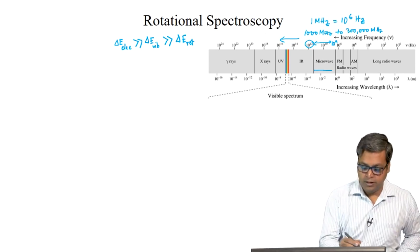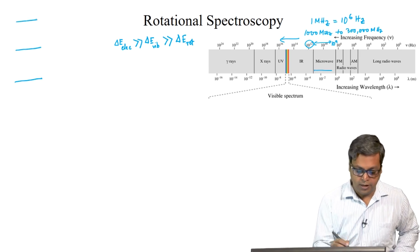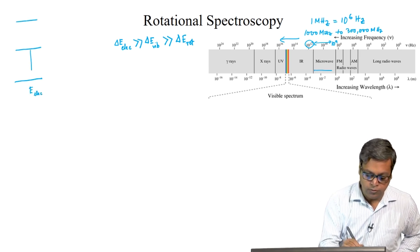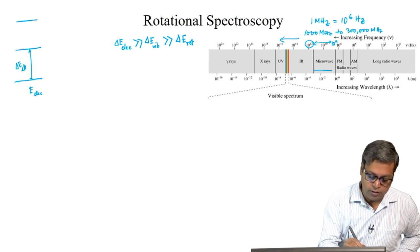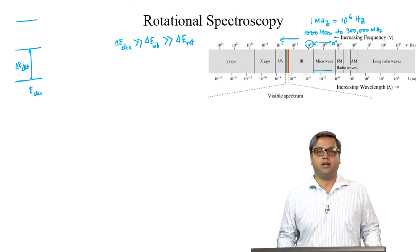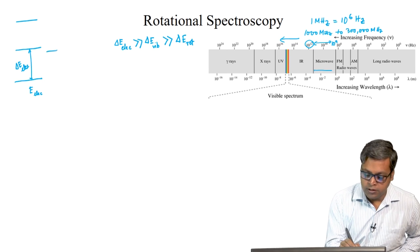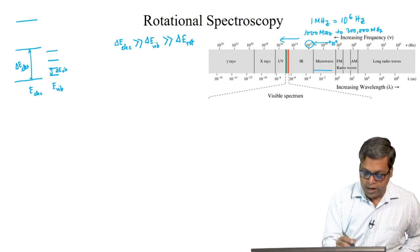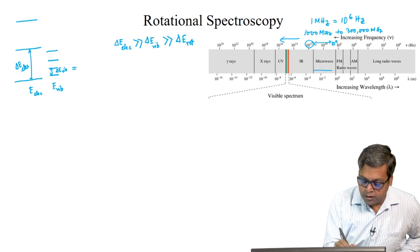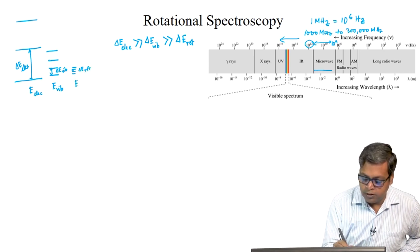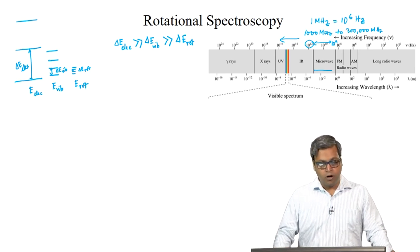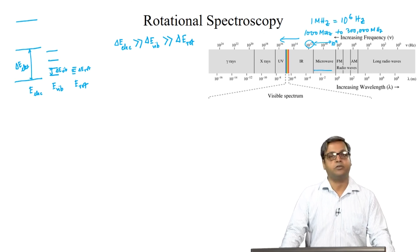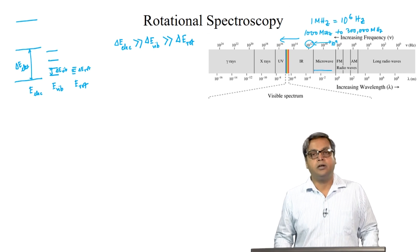If we draw the energy levels, we have electronic energy levels E electronic, and this is delta E electronic. For each electronic energy level, we have different vibrational energy levels — this is E vibrational. A transition here has energy difference delta E vibrational, and for each vibrational level, there are different rotational levels. This is delta E rotational, and we are plotting here the rotational levels. Because today we are talking about rotational spectroscopy, let us consider a rotating rigid body.